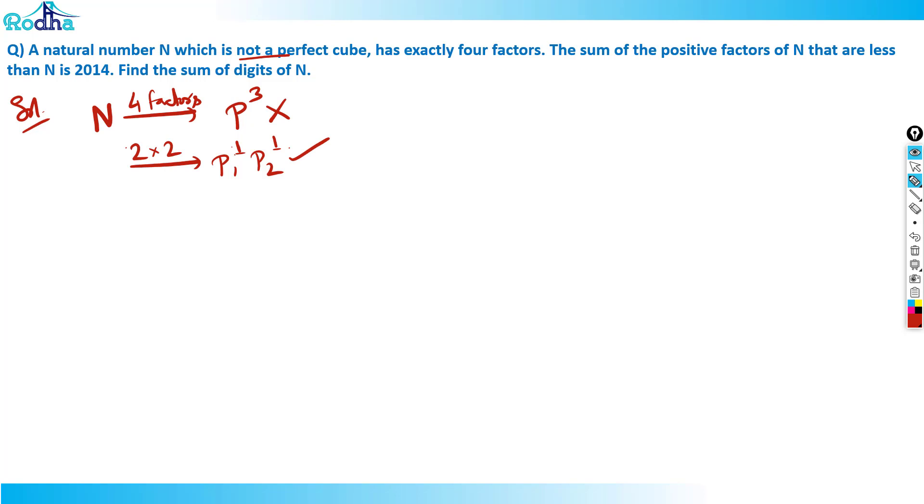That means N equals p1 times p2. If N equals p1 times p2, how many factors does it have? It has factors like one, then p1, then p2, and then p1 times p2.